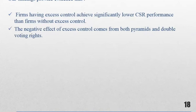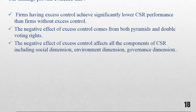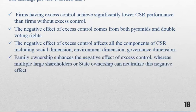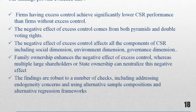So to summarize, we can say that firms having excess control achieved significantly lower CSR performance than firms without excess control. Second, the negative effect of excess control comes from both pyramids and double voting rights. This negative effect affects all the components of CSR, including social dimension, environment, governance. Family ownership enhances the negative effect of excess control, whereas multiple large shareholders or state ownership can neutralize this negative effect. And finally, the findings are robust to a number of checks like endogeneity concerns using alternative sample composition and regression frameworks.